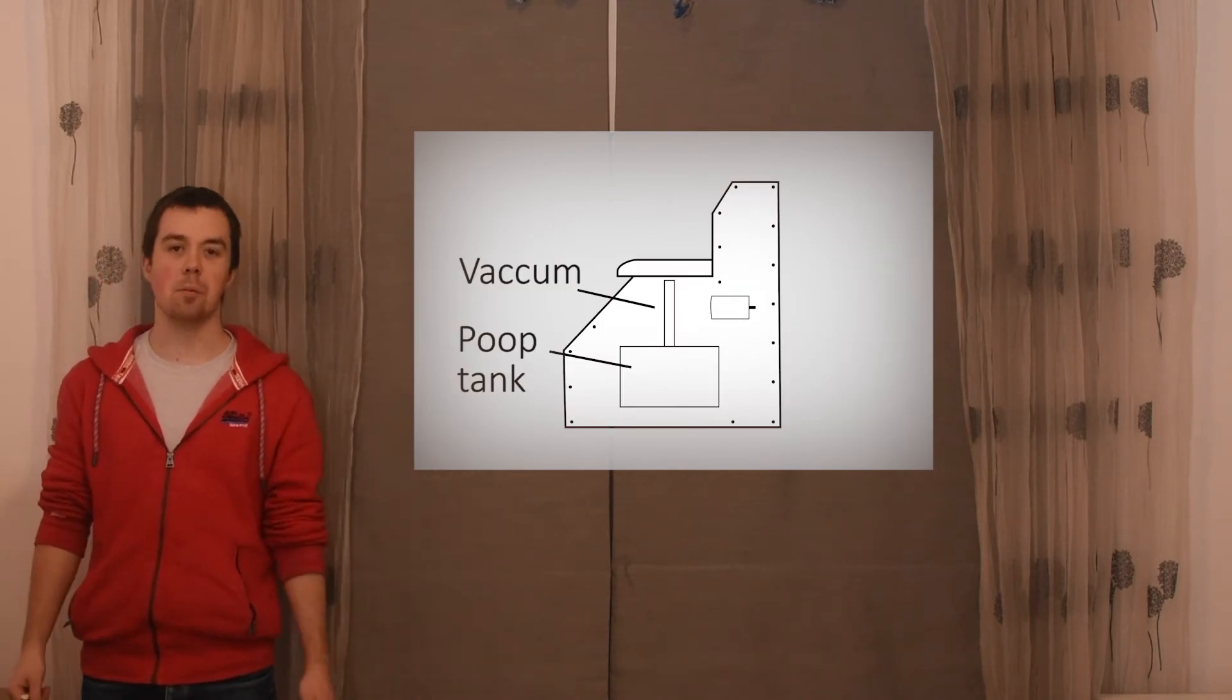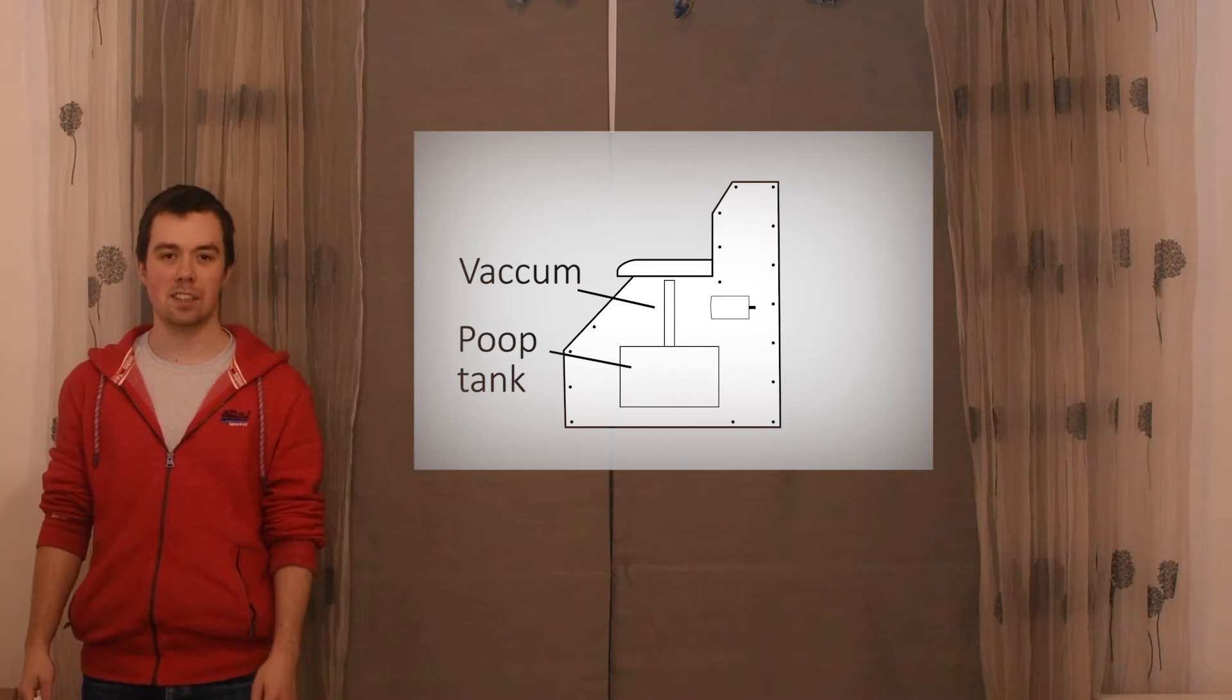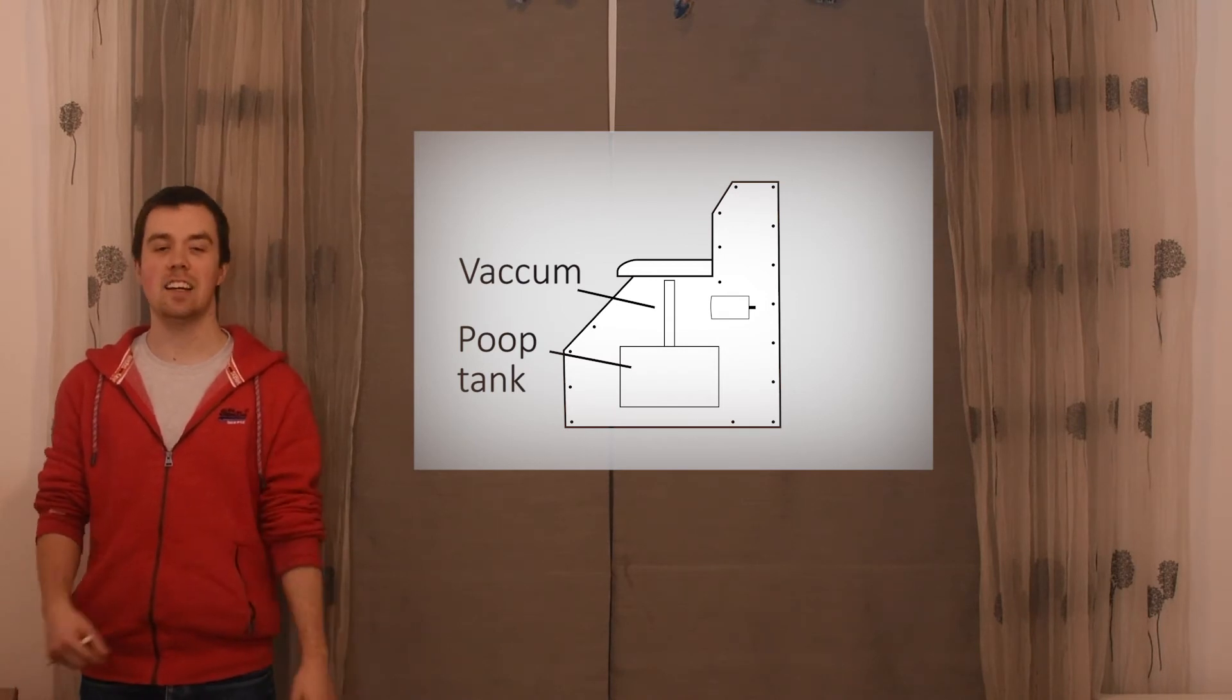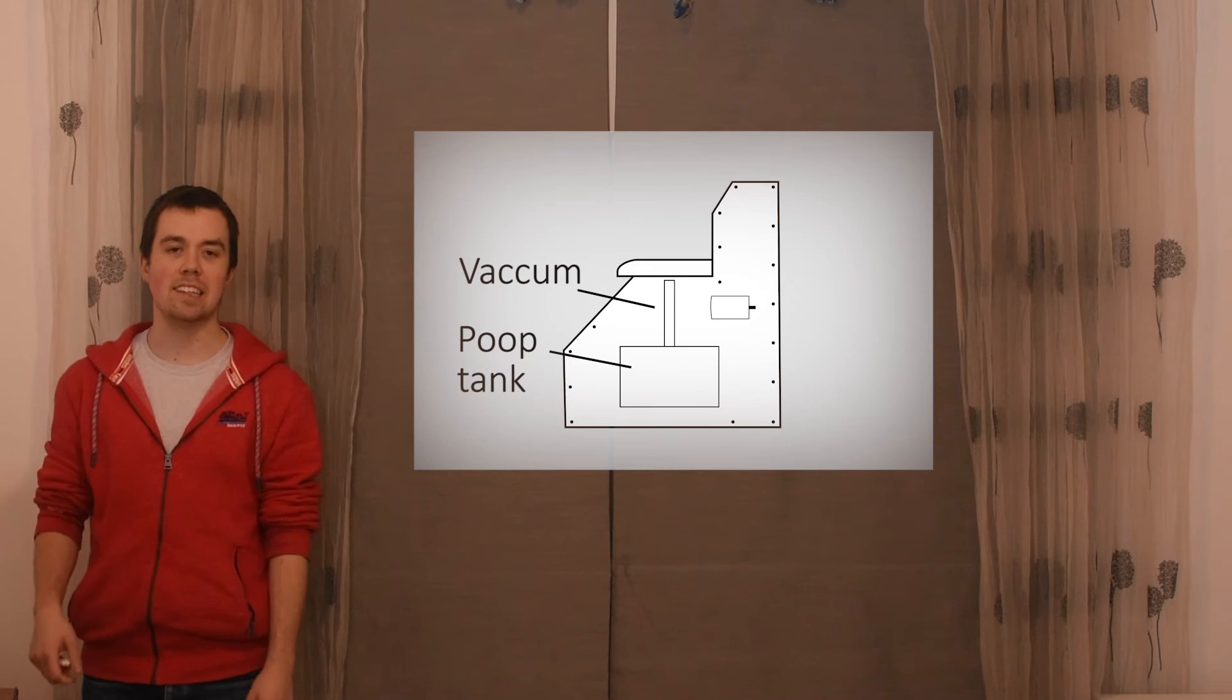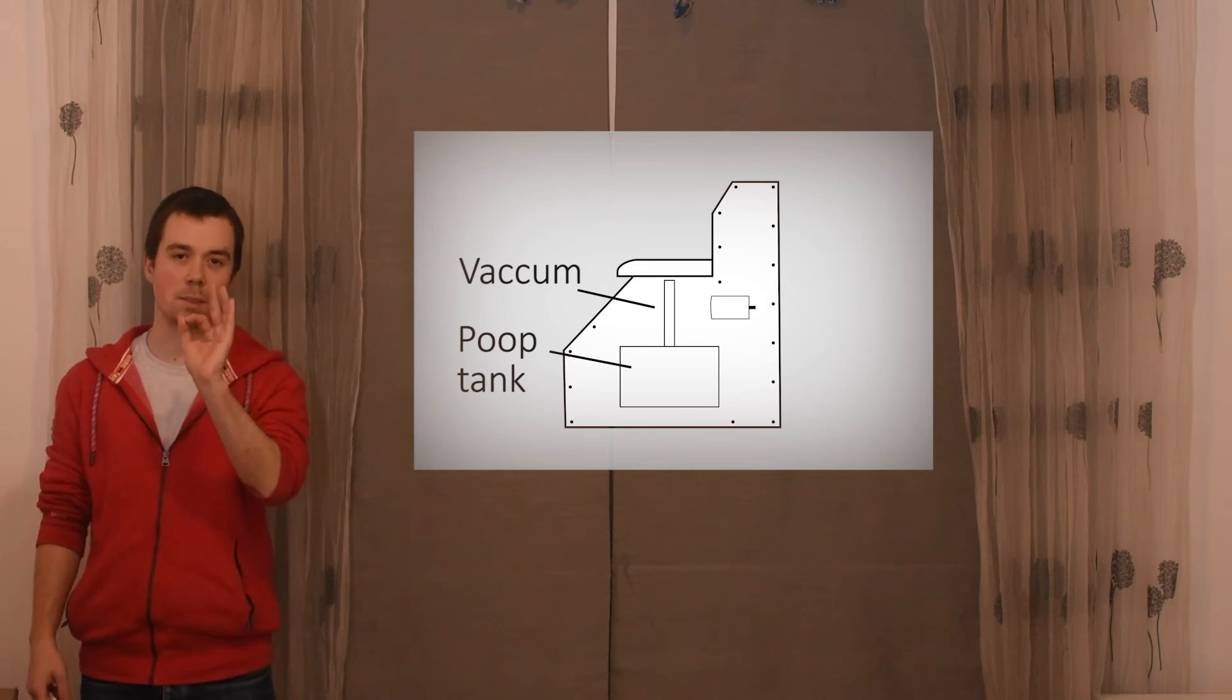Basically, we have the same problem where there's no gravity. So what we do is, we have a vacuum underneath the toilet seat. But the problem is, the hole that you've got to hit is quite a small hole.